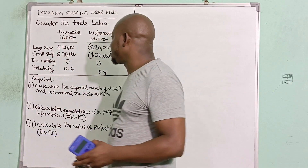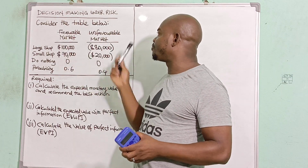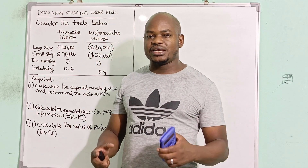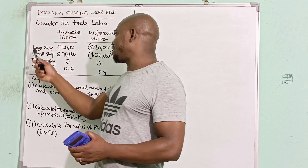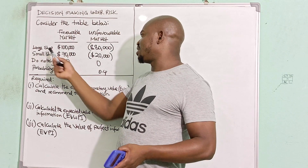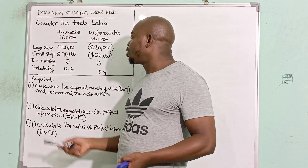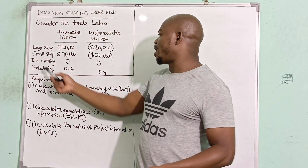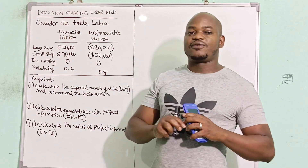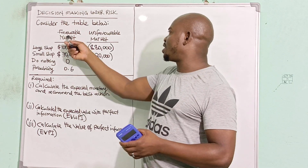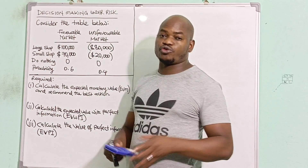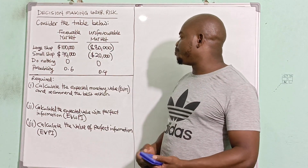Looking at the table on the board, we have favorable market and unfavorable market — these two are the states of nature, conditions we cannot change and have no control over. On the other side are the alternatives I can choose from: I can invest in a large shop, invest in a small shop, or choose to do nothing. The alternatives are my choices; the states of nature are like good or bad economy — you have no control over those.